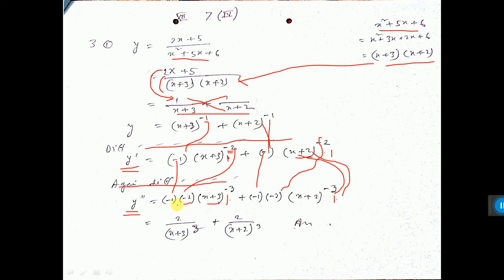Now just simplification: minus times minus gives plus 2, and minus 2 goes to the denominator, giving plus 2 over the expression. This is a very easy sum if you apply this technique — otherwise it would be very tough.